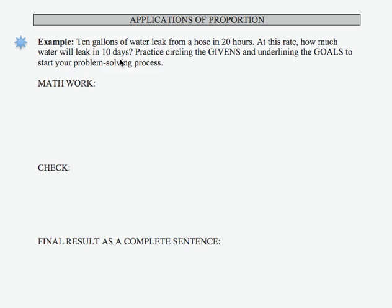Here we have an application of proportions. The example states: 10 gallons of water leak from a hose in 20 hours. I'm going to circle 10 gallons of water and 20 hours. That is a rate. At this rate, how much water will leak in 10 days? So this part is what we're looking for. The instructions say to practice circling the givens and underlining the goals, which we have done.